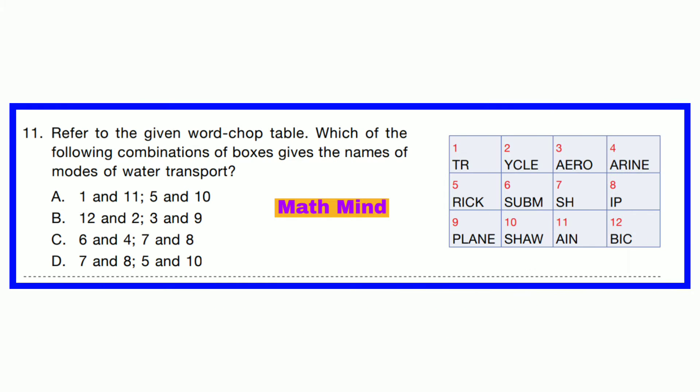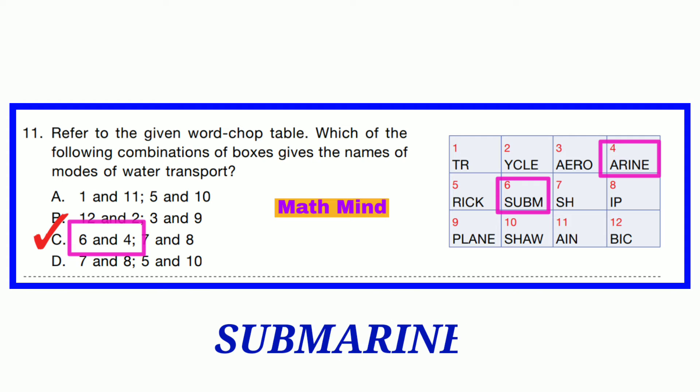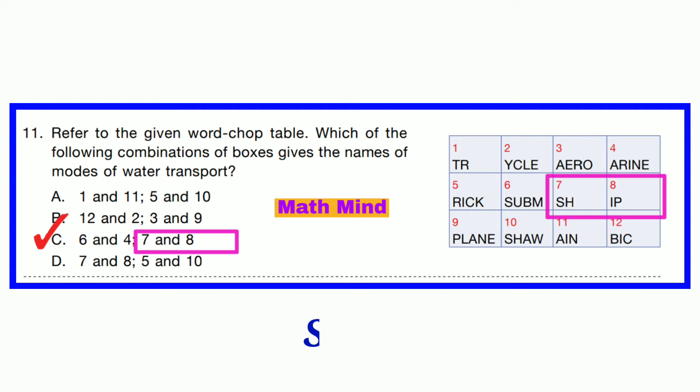Question number 11. Refer to the given word chop table. Which of the following combinations of boxes gives the names of modes of water transport? Option C is correct. Combining both, we get submarine. Another word that can be formed is ship.